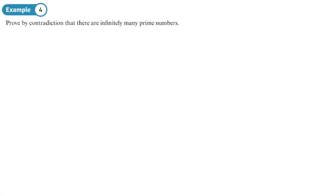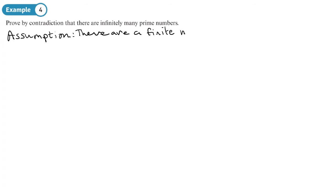Example four: prove by contradiction that there are infinitely many prime numbers. This is a nice proof and it's actually linked to prime factors — like when you did factor trees and worked out prime factors. Our assumption is the opposite: there are not infinitely many prime numbers, but rather a finite number of prime numbers.